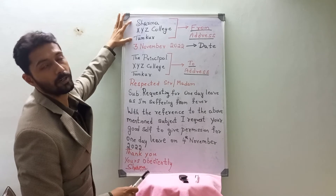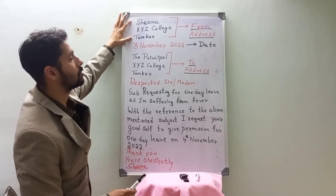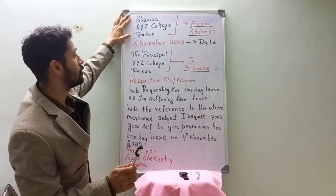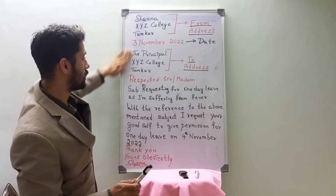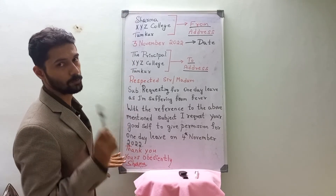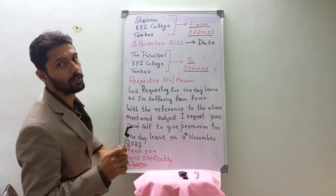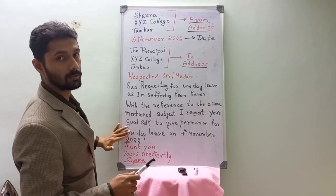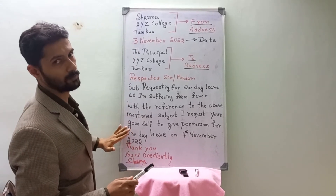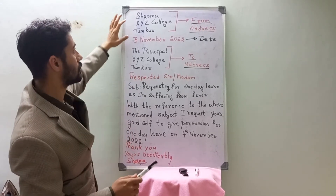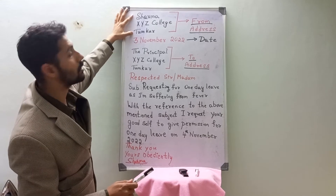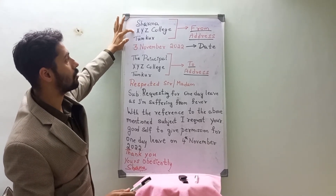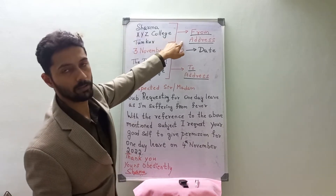The first part is from address. You should write the from address. Always keep in your mind, my dear students, that you should always leave the left margin first. The entire thing should come in the left margin. For example, Sharma, XYZ College, Tumkur — this is the from address.